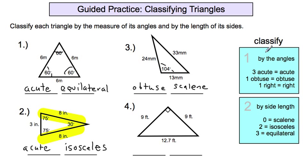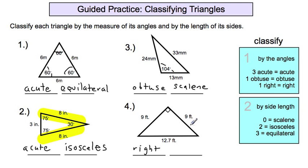Last example: classifying by the angles. I don't know the exact measure of two angles, but they're both acute. However, this one has a square corner — that's a right angle. If you have one right angle, you have a right triangle. Now for the sides: we have a 9-inch side, a 9-inch side, and a 12.7-inch side. Two sides are the same length, so we have an isosceles triangle. This is a right isosceles triangle.